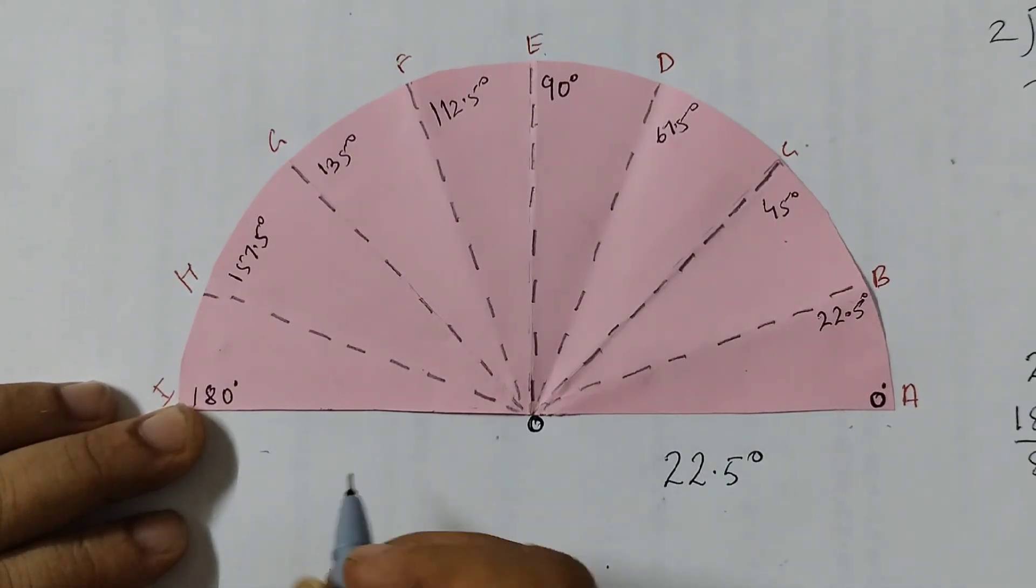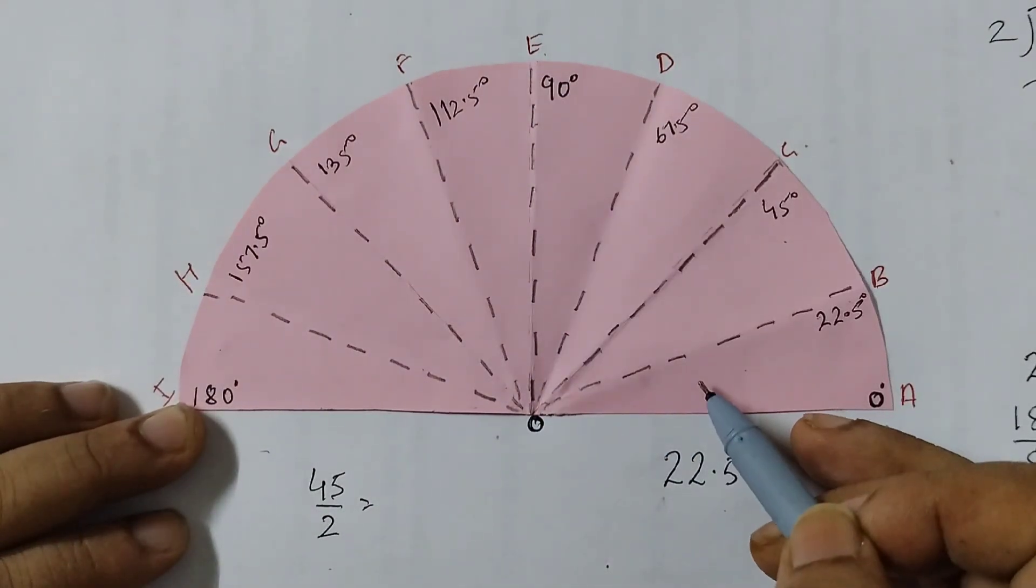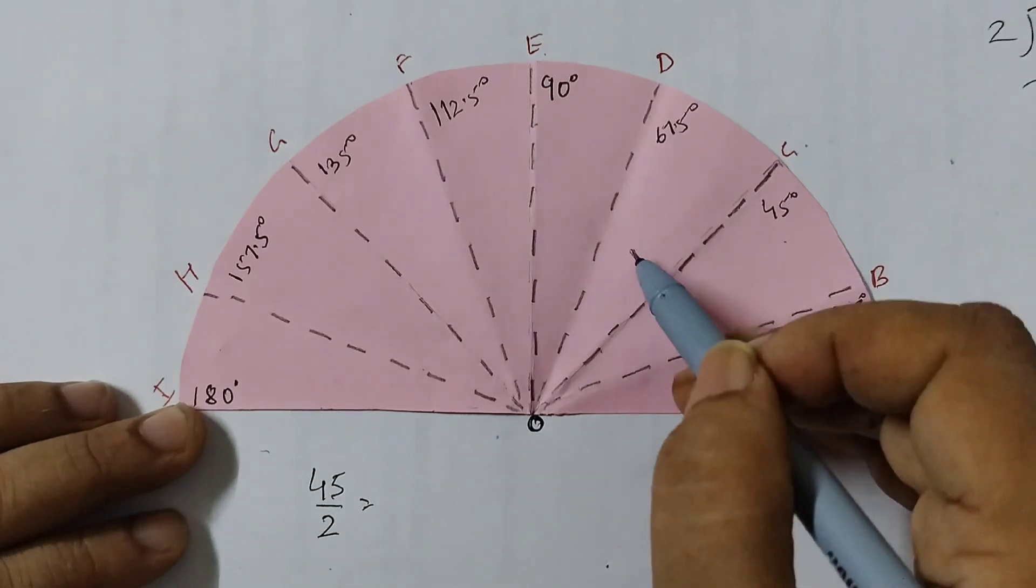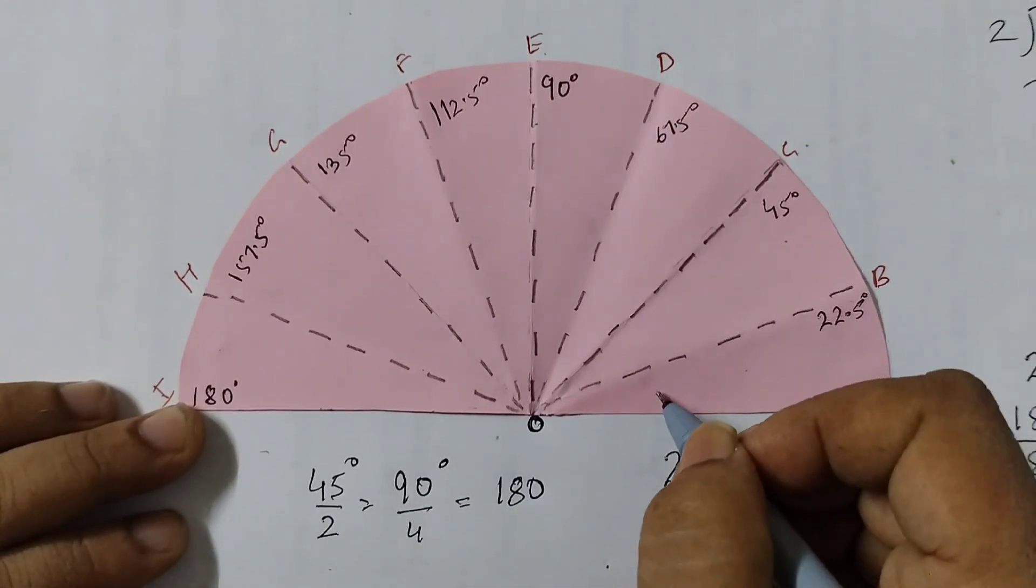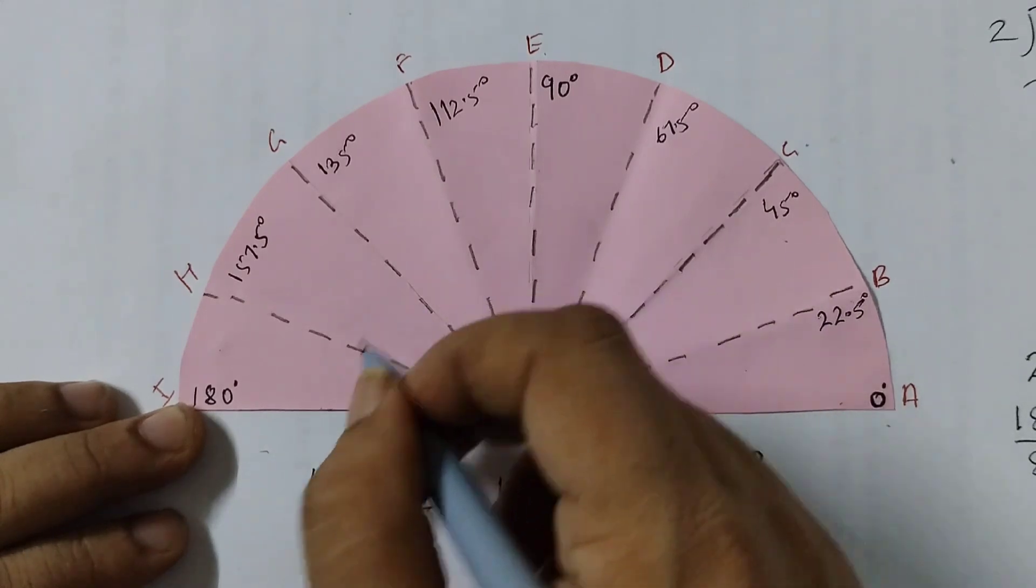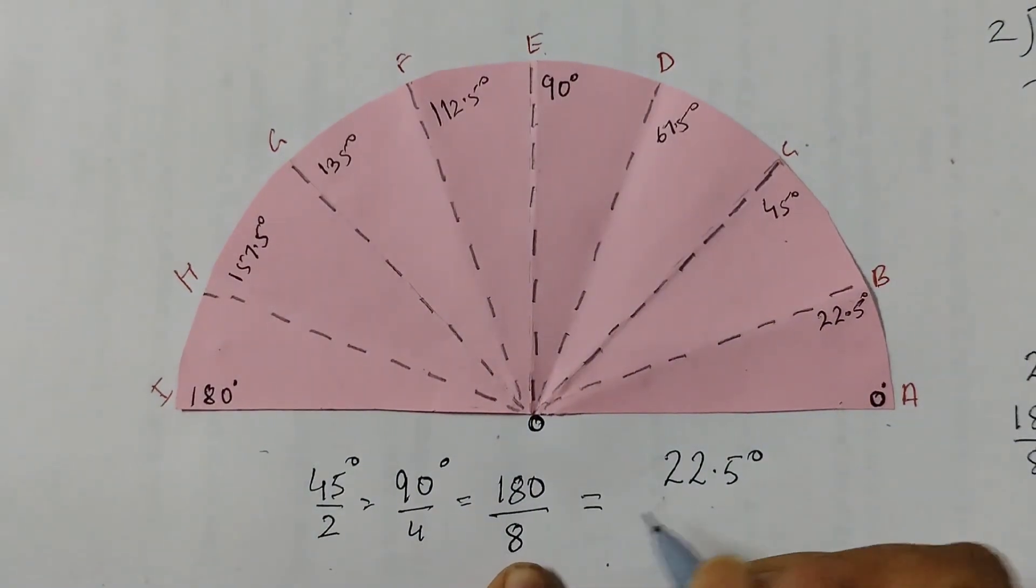So there are different ways you can find out. You can do 45 divided by 2, or you can do 90 divided into 4 parts, so 90 divided by 4, or we can do 180 and it's divided into 1, 2, 3, 4, 5, 6, 7, 8. All of this will give you 22.5 degrees.